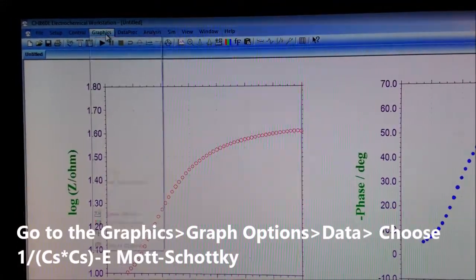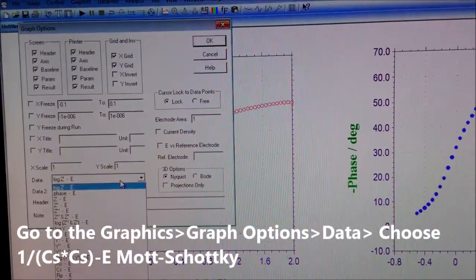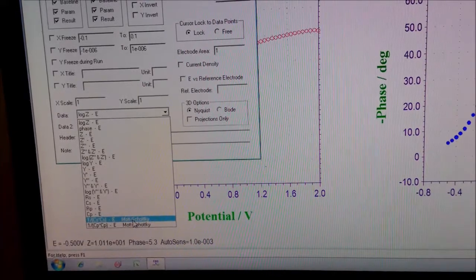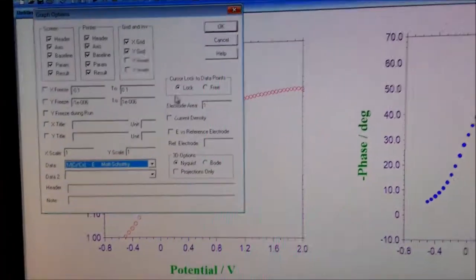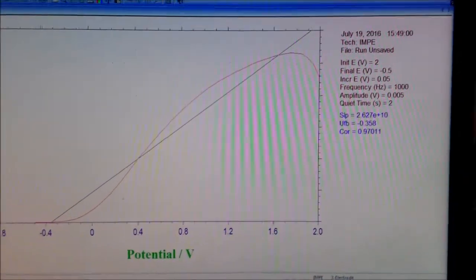you have to go to the Graphics section, then go to Graph Options and Data. You just select 1/(Cs²) versus E, the Mott-Schottky plot, and OK. Here you get the Mott-Schottky plot.